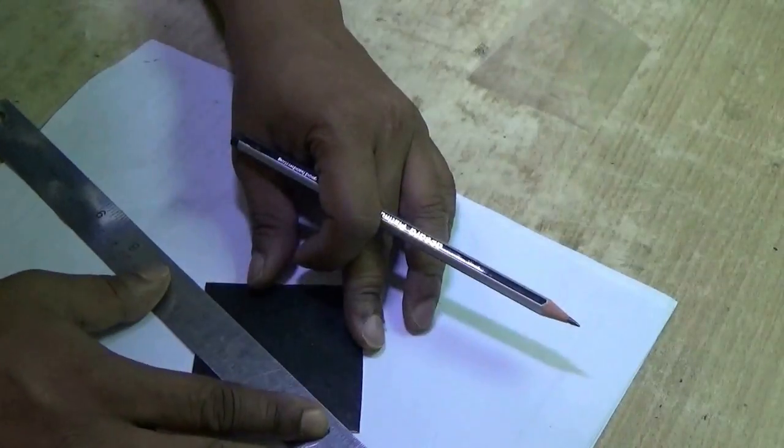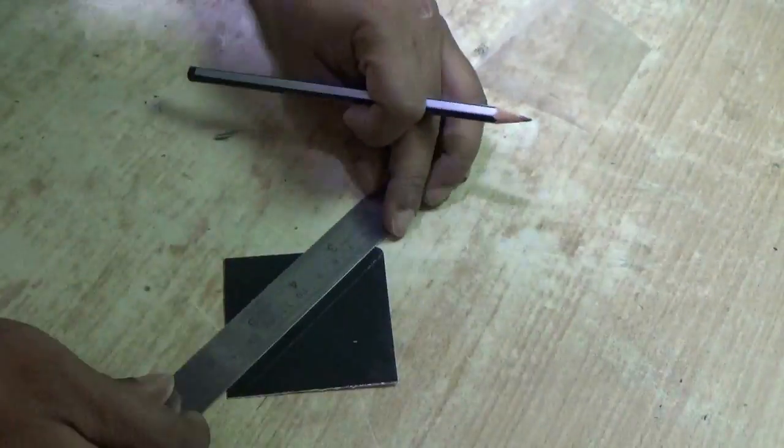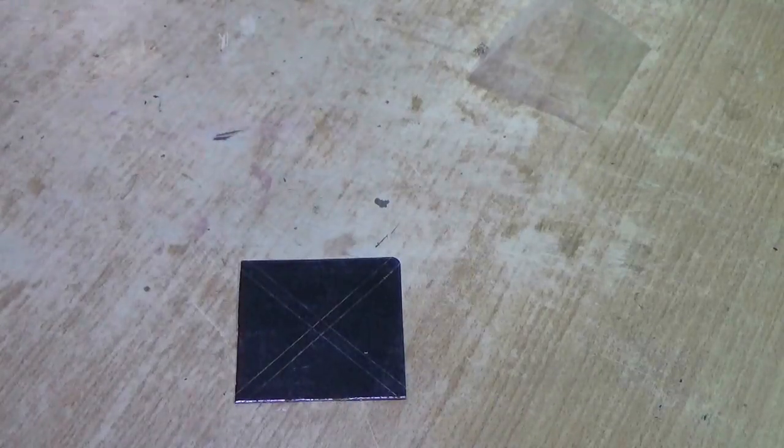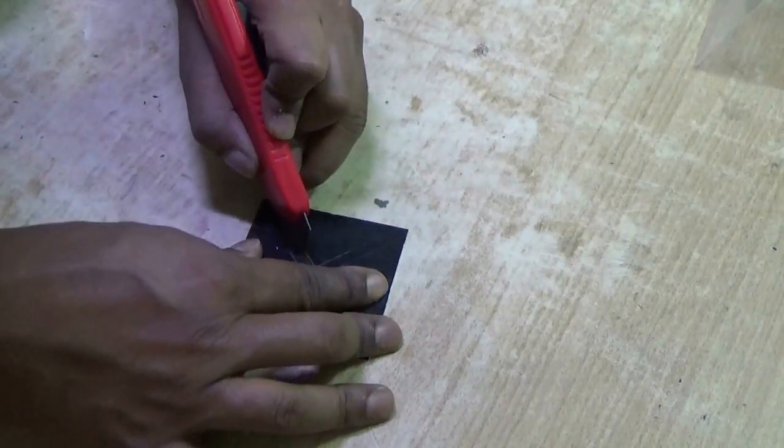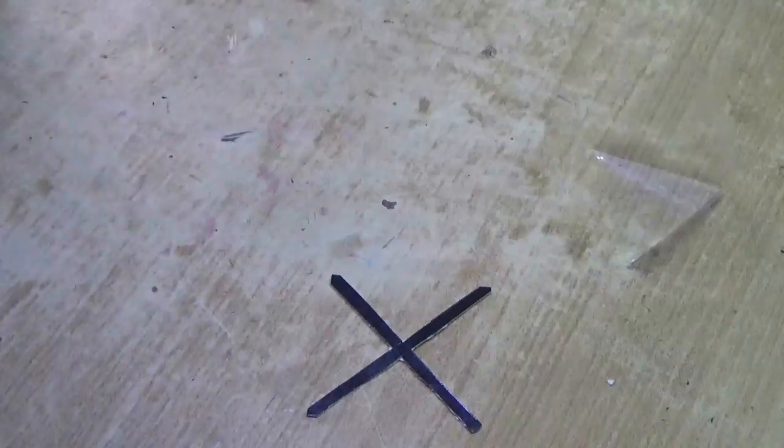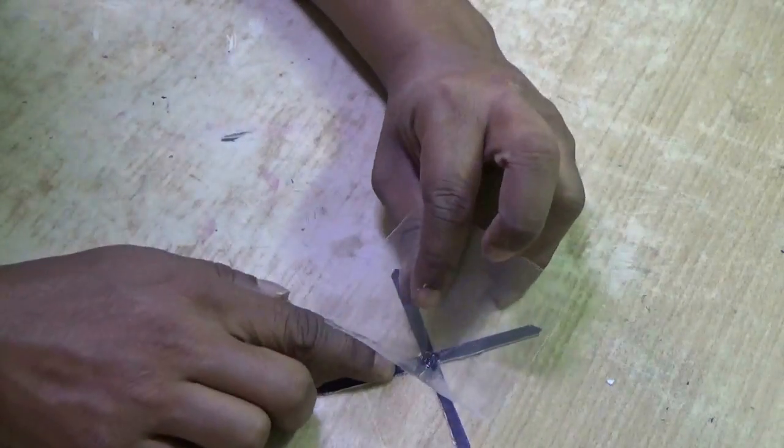Now take a black thick paper and draw an X like this. This will be the stand of the pyramid. Glue the pyramid upside down.